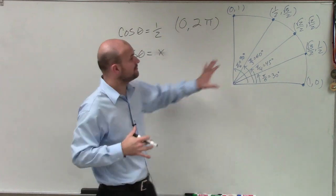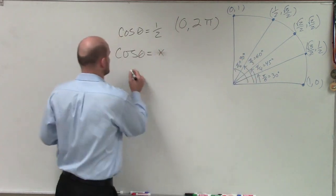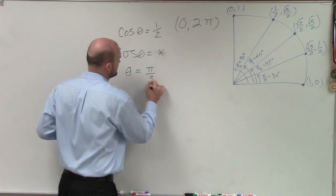So if we look at this, if we look at our first quadrant, we can see that the cosine of theta equals 1/2 at pi over 3. So therefore, we could say theta equals π/3.